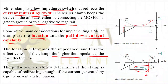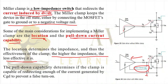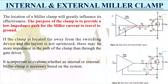The location of the miller clamp determines its impedance and therefore its effectiveness. Higher impedance means lower effectiveness. If the low-impedance switch is placed close to the main switch, it has less parasitic impedance and can carry more current. If the switches are farther apart, stray inductance and capacitance from the PCB traces come into play and reduce effectiveness. Pull-down current capability determines whether the clamp can redirect enough current generated by Cgd to prevent false turn-on.